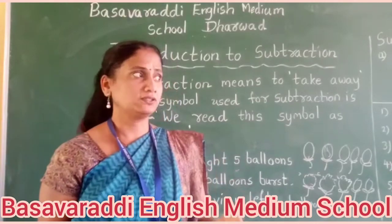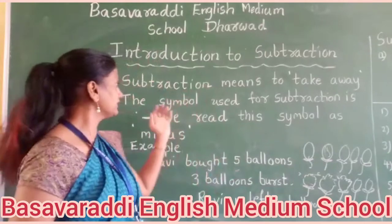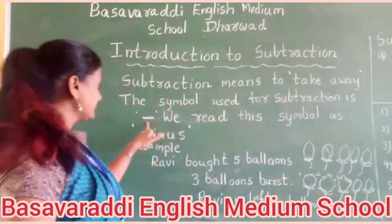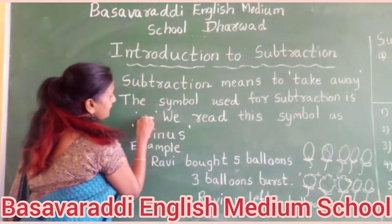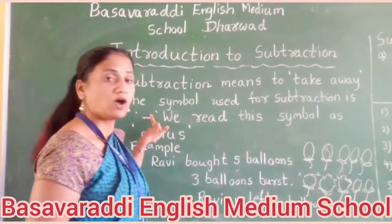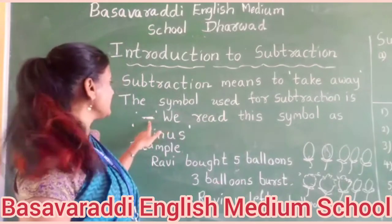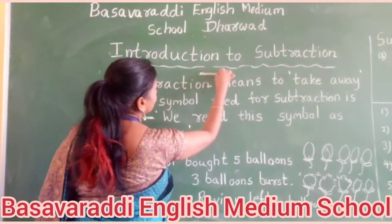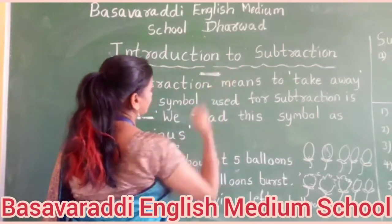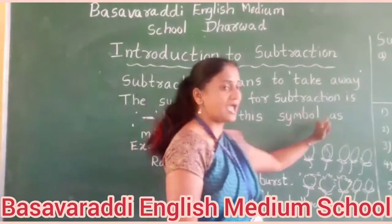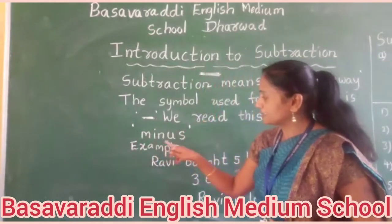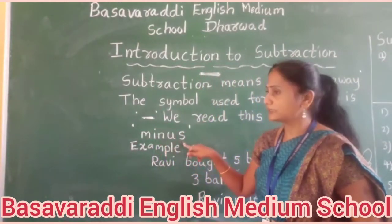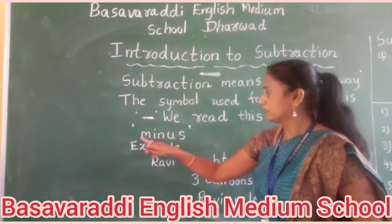That is subtraction. When we are using subtraction, the symbol used for subtraction is this sign — the minus sign. We are putting this one: minus. How do we read this one? Minus. This symbol is minus — M-I-N-U-S. Minus sign.